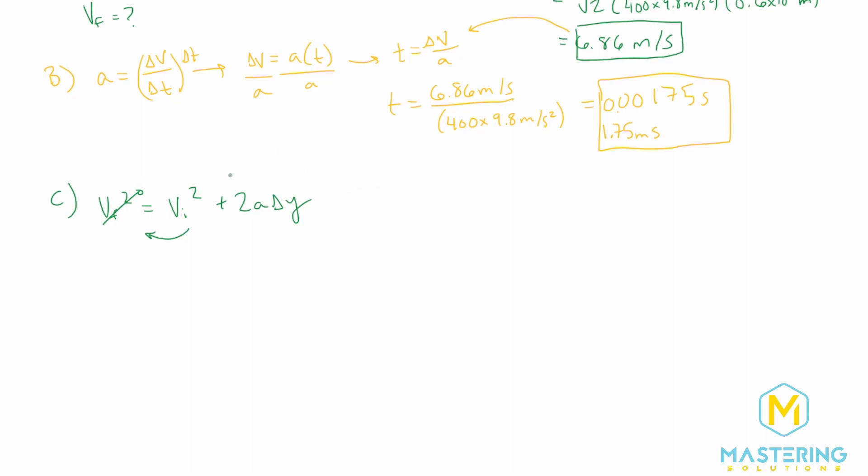Because what we're doing is we're looking at half of it jumping up in the air, and then it stops, and then it'll fall back down. So we're looking at this half right here. The final velocity is zero. The v initial is what we found up here. So now we have negative v initial squared is equal to 2A times the delta Y.